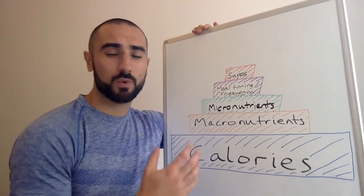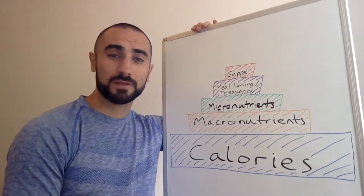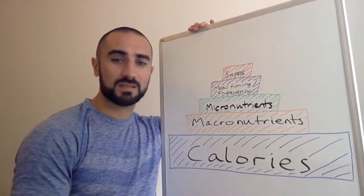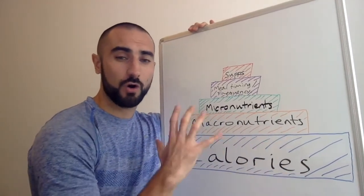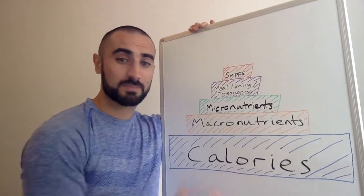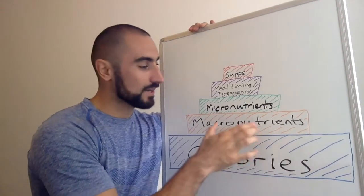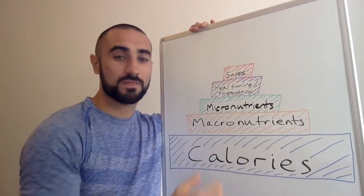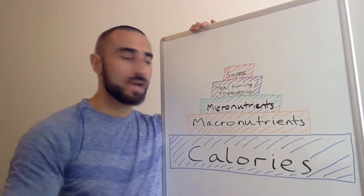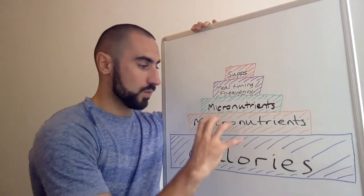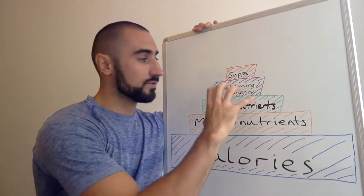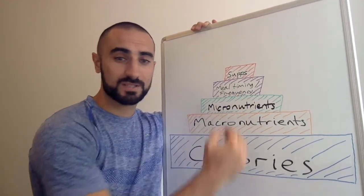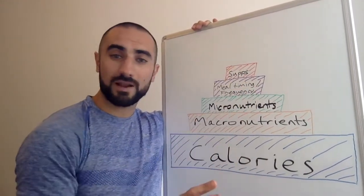So what I've drawn up for you here is what we refer to as the nutrition pyramid. Essentially speaking, the large proportion of importance is placed on the base of the pyramid and gradually each stage gets smaller as it rises, and therefore that element decreases in importance. It's important to note that without the previous level of the pyramid from the bottom upwards, the things at the top are irrelevant.